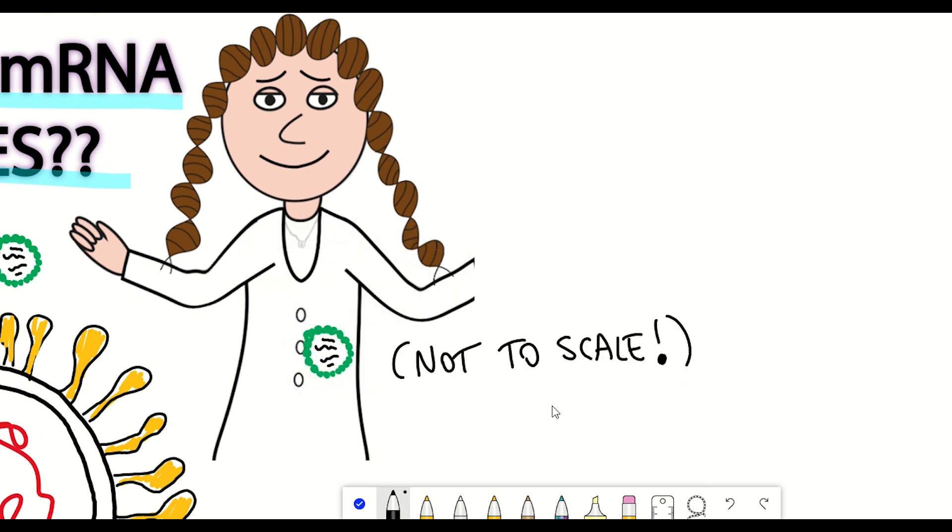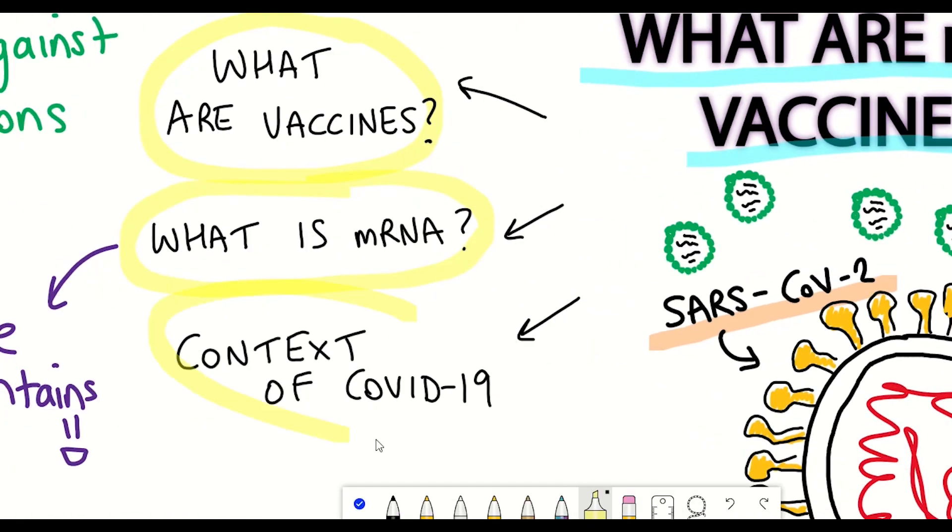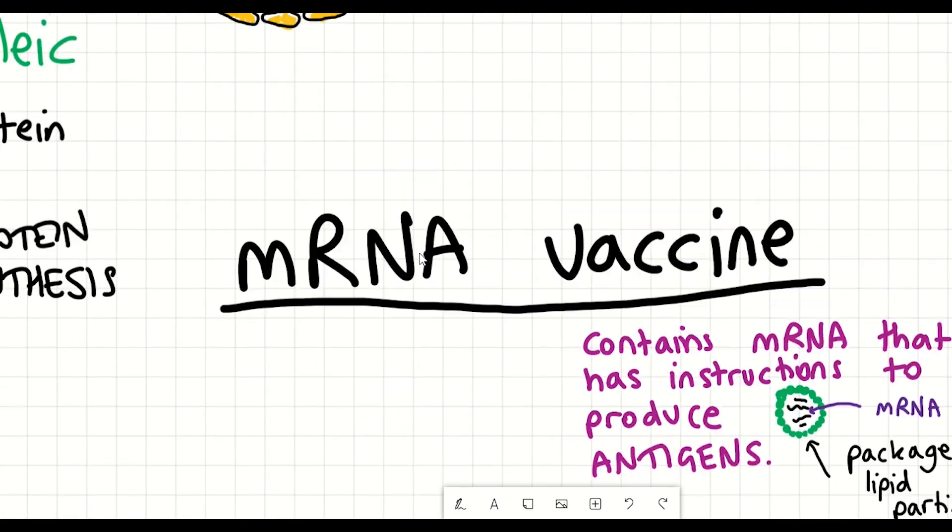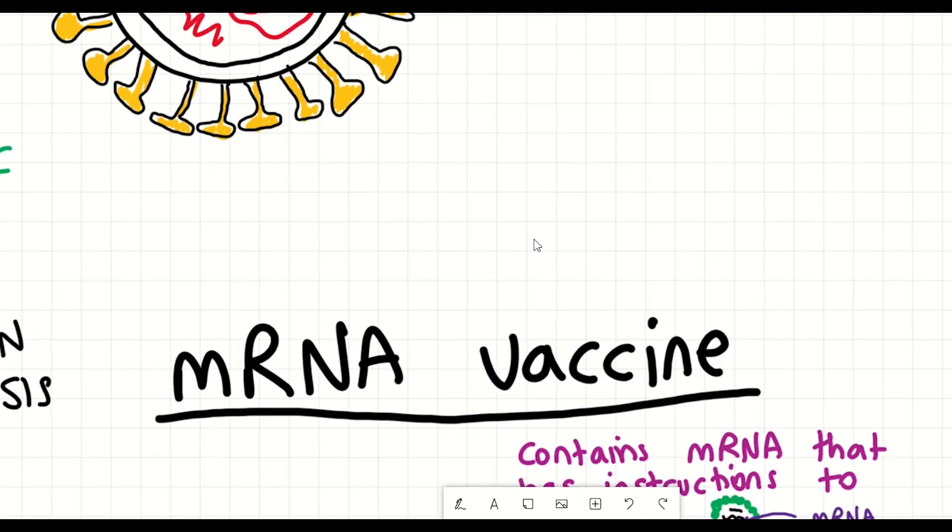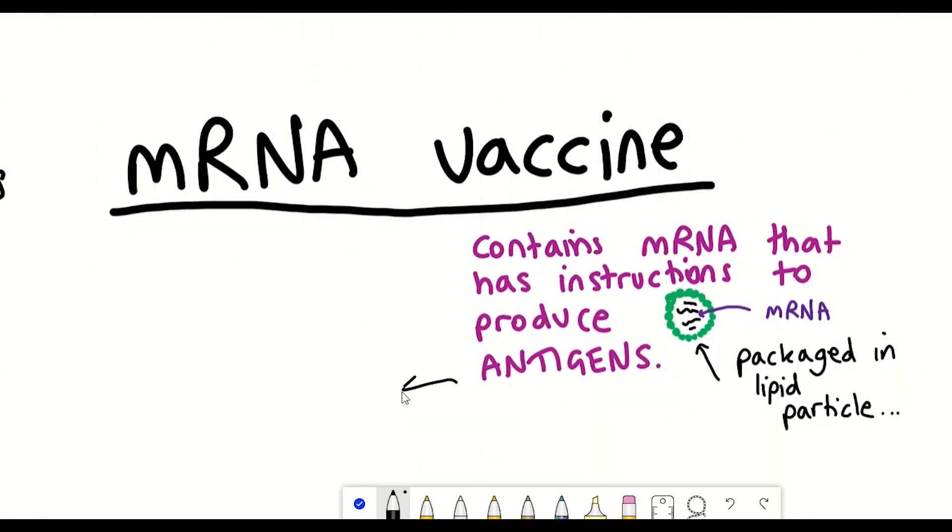So what is an mRNA vaccine in the context of COVID-19? Well, COVID-19 is caused by the virus SARS-CoV-2. And so to be able to have an effective mRNA vaccine against SARS-CoV-2, we need that mRNA to encode an antigen of SARS-CoV-2.